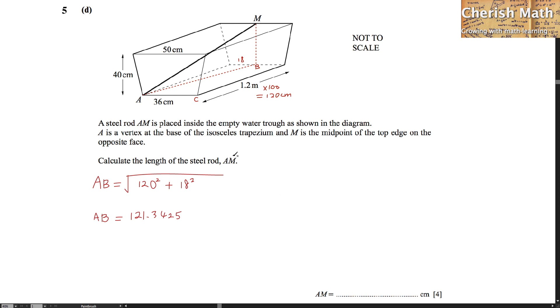The last step, we need to find what is the value of AM and again, we are using the Pythagorean theorem to solve our question here. That would be 40 squared, which is the height BM. It is the same as this 40 cm plus the value that we got it from here.